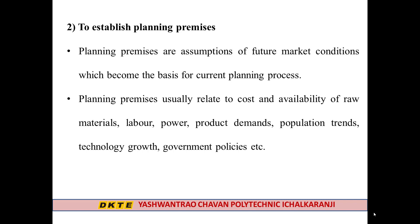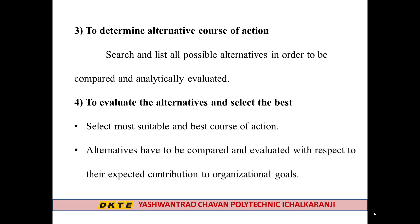In the planning premises step, we have to consider the future scenario — what is the raw material cost, labor availability, product demand in the market, population trends, and what technologies to use for manufacturing. The third step of planning is to determine an alternative course of action. We want to find many alternatives during the planning phase — searching and listing all possible alternatives to be compared and analytically evaluated.